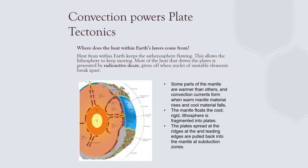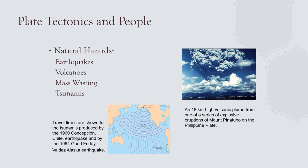Plate tectonics is powered by convection — upwelling plumes, slab push as the convection cell sinks. The heat comes from residual heat of the Earth and radioactive decay. The deeper you go into the mantle and into the outer and inner core, the hotter it gets, causing these plumes, density flows, and convection cells. Plate tectonics affects people: it causes earthquakes, volcanoes, mass wasting such as avalanches, and tsunamis.